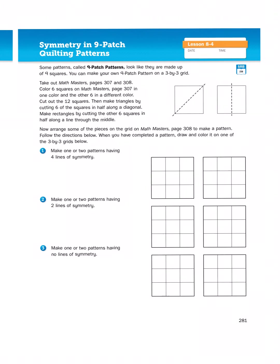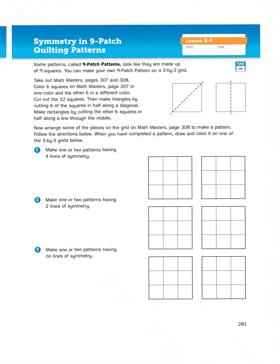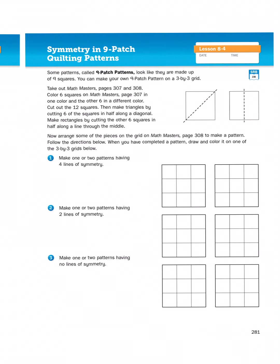Then when we get to the second section here, it says some patterns called nine-patch patterns look like they are made up of nine squares. You can make your own nine-patch pattern on a three-by-three grid. So the idea here is that you're going to create some different patterns that have either four lines of symmetry, two lines of symmetry, or no lines of symmetry.